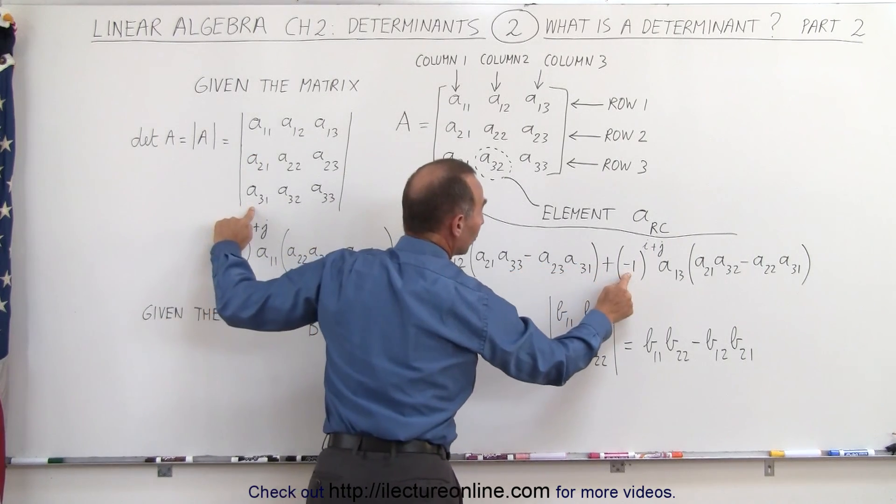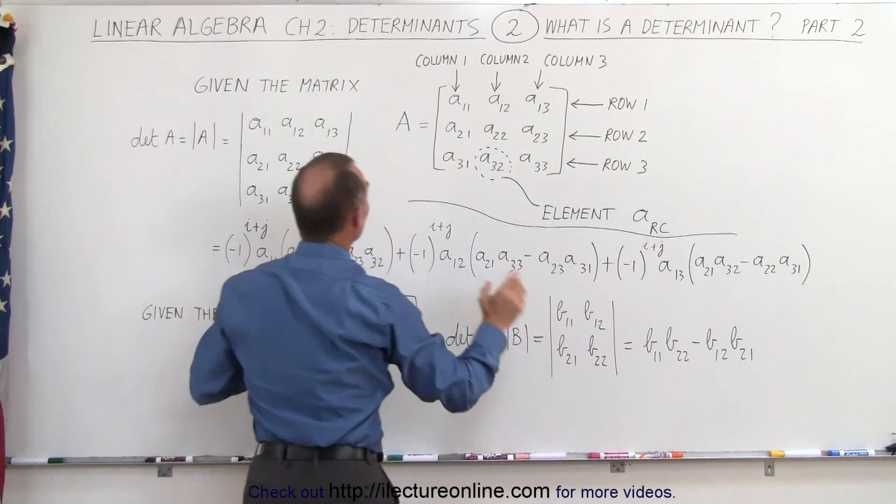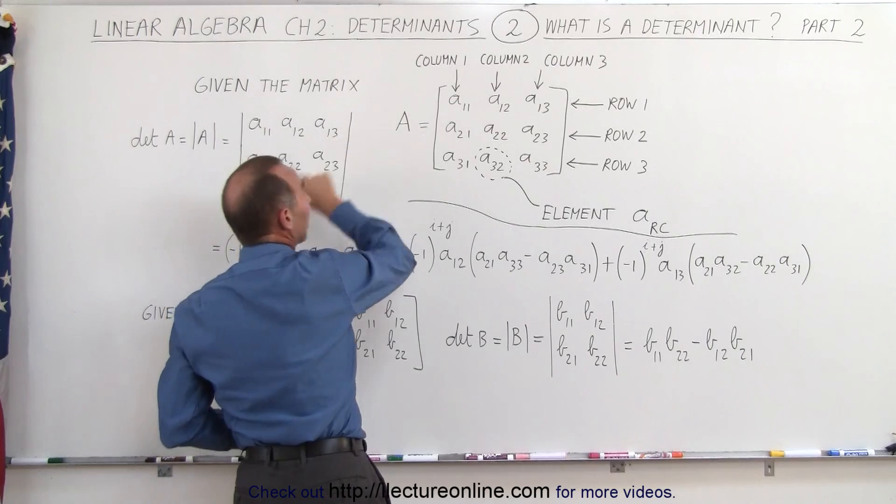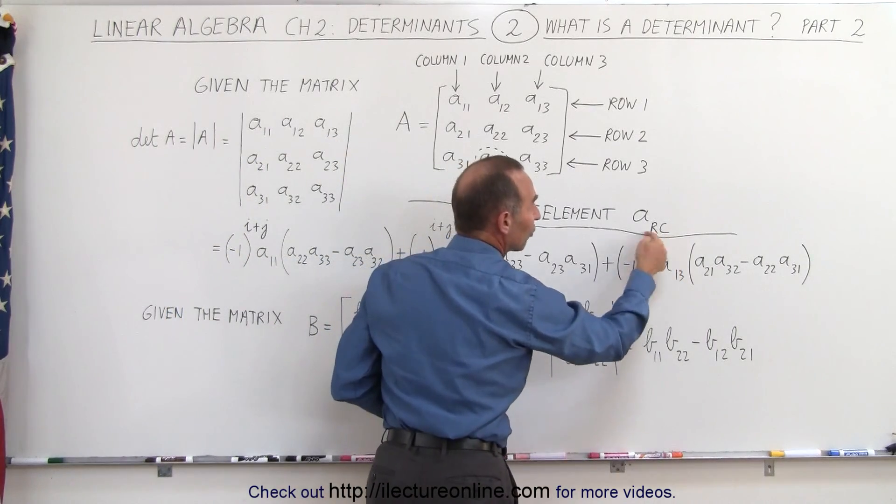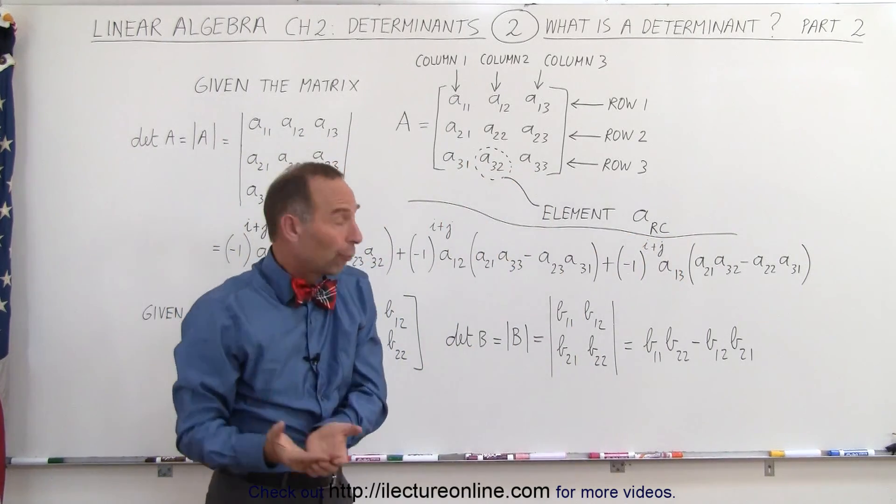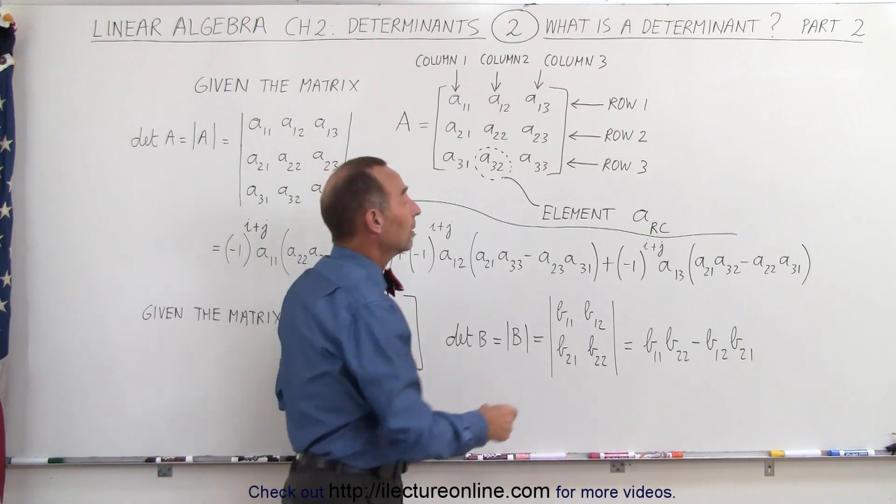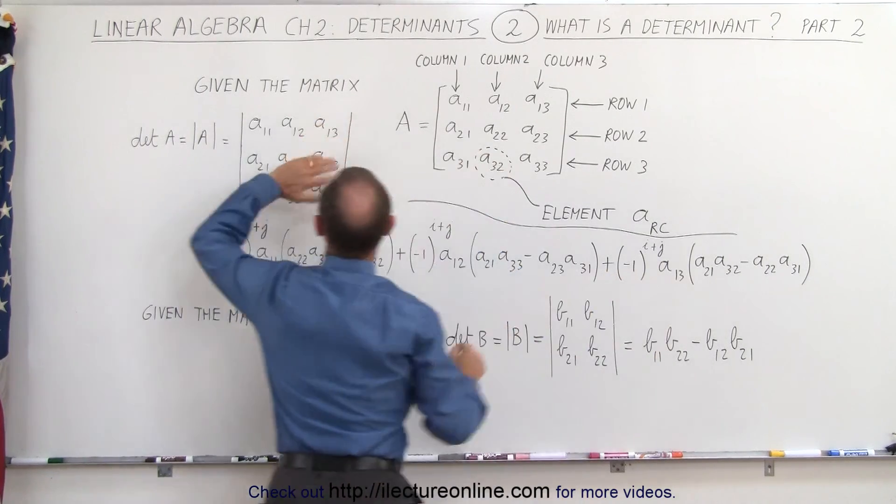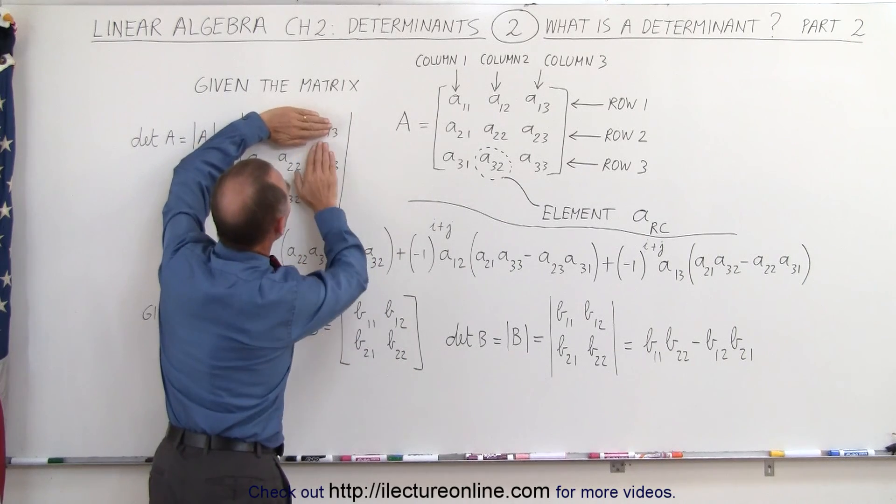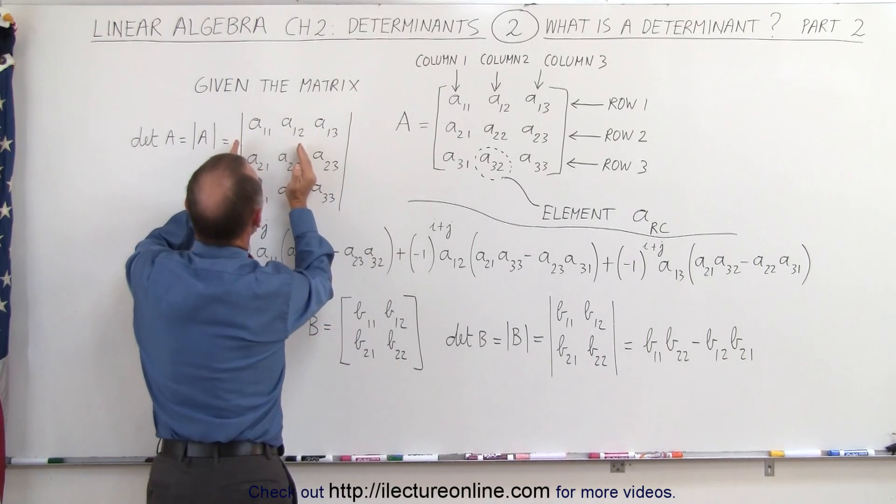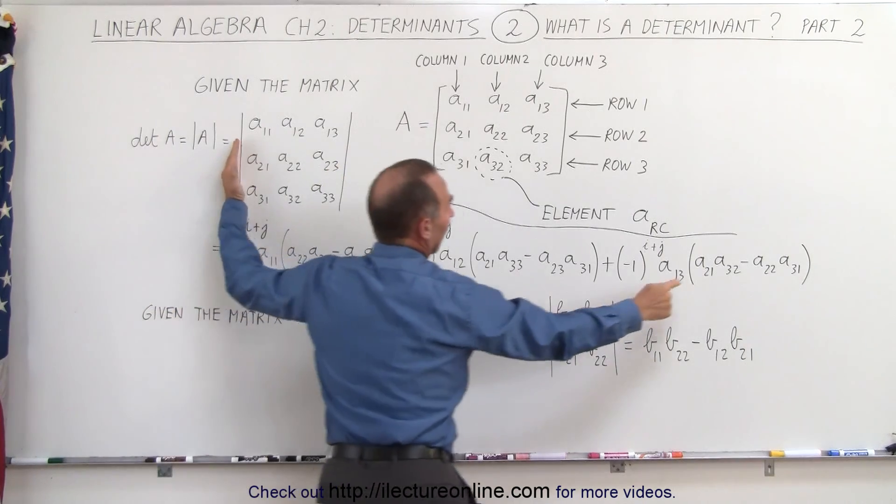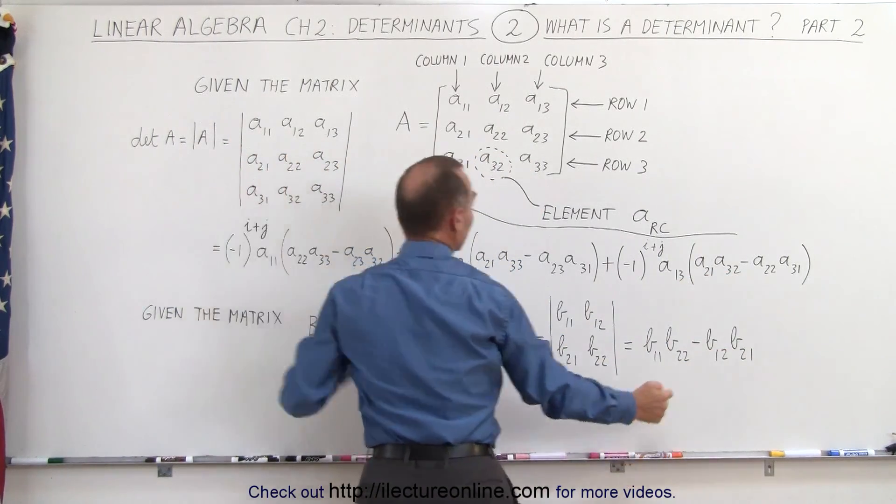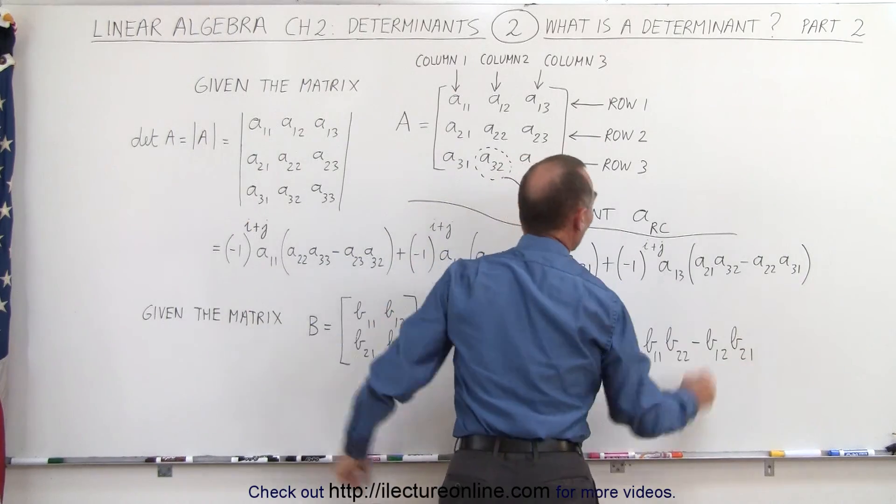Plus, again, minus 1 to the I plus J. Now in this case, you take the final element in the upper row, you have 1 and 3, so you add 1 plus 3 gives you 4. Minus 1 to the fourth power is, again, a positive quantity, that would be positive 1 times A13. And again, if you get rid of this row and this column, you have those four elements left, and you multiply those two together, A21 times A32 minus, multiplying those two together, A22, A31.